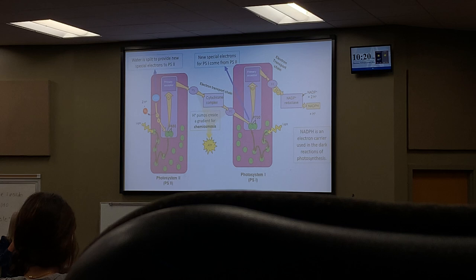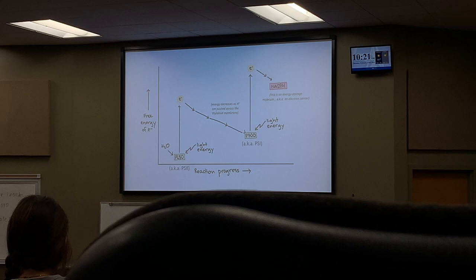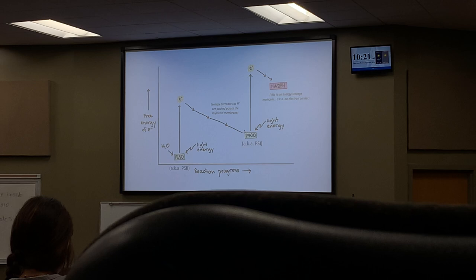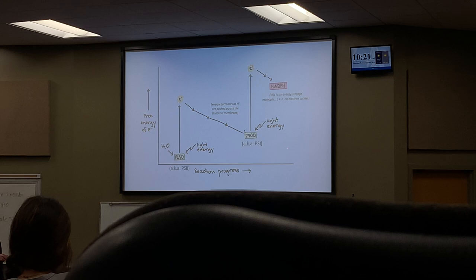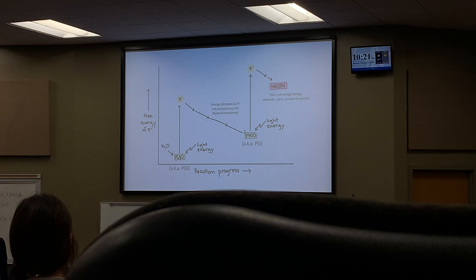Looking at the energy graph: it's showing the same concept as the downward arrows in the electron transport chain — the amount of energy the electrons have. From water, you get electrons; photosystem 2 energizes them to a high level. They lose some energy traveling through toward photosystem 1, but photosystem 1 — with its pigments and reaction center — re-energizes them. Then they can be placed onto NADP+ to become NADPH.